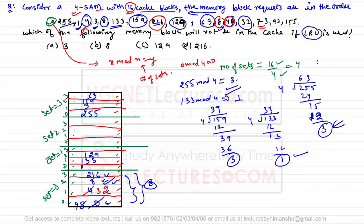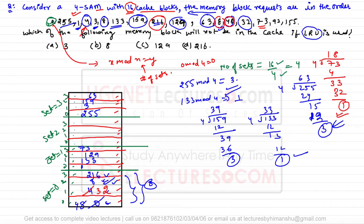Block 73 mod 4 gives remainder 1, so it is placed in set number 1. Next is block 92, which is completely divisible by 4, mapping to set number 0. Set 0 is full, so we apply LRU: 32 and 48 and 8 are recent, but 216 was referenced the longest ago, so we replace 216 with 92.